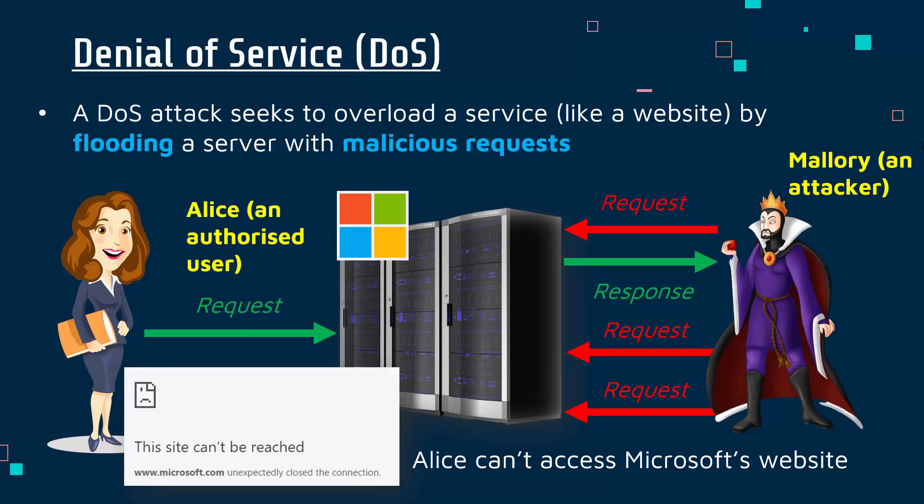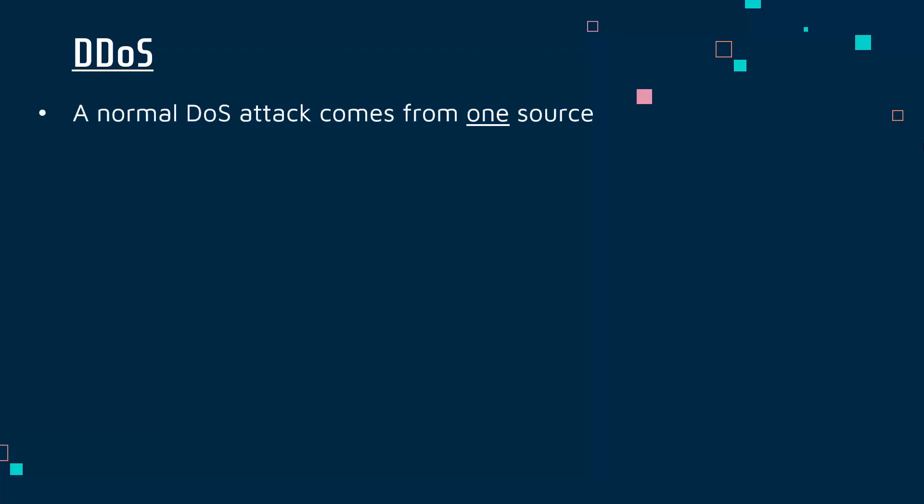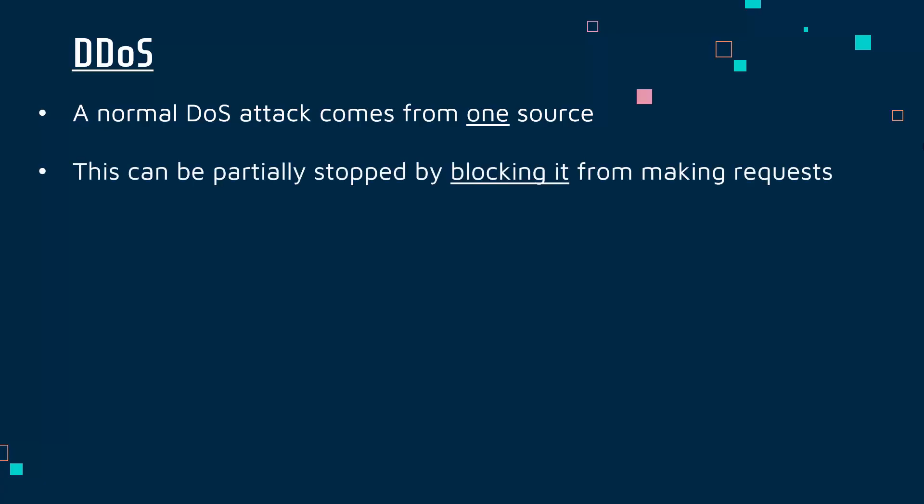There is a slight extension of a DOS attack, which is a DDoS, which you may have heard of, especially if you do gaming or watch streamers. It's a fairly common, unfortunately, attack. A DDoS is different because normally a DOS attack is coming from one source — just Mallory doing it from one computer — and that does limit the effectiveness of it, because the company is able to block that person. The server gets a request from Mallory and just ignores it, meaning they won't be wasting time sending responses to malicious requesters, which will partially stop the attack.